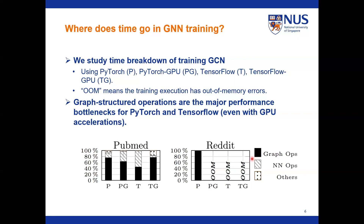In this work, we identified that most of the time in GNN training goes to graph structure operations. These graph structure operations include gathering neighbors' activations, sending vertices' activations, etc. We studied the time breakdown of training GNN using existing popular frameworks PyTorch and TensorFlow for both CPU and GPU counterparts. As shown in the figure, 44% to 99% of the overall training time is spent on graph structure operations. Even with GPU acceleration, it remains the major bottleneck.